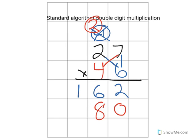The next thing I'm going to do is multiply my tens position by my tens position. And 4 times 2 is 8 plus the 2 up here is 10. So 27 times 40 is 1080 or you could say 27 times 4 is 108.